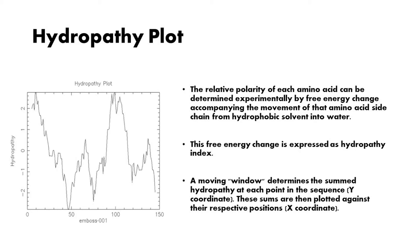A hydropathy scale is based on the hydrophobic and hydrophilic properties of the 20 amino acids. A moving window determines the summed hydropathy at each point in the sequence, and these sums are then plotted against their respective positions.